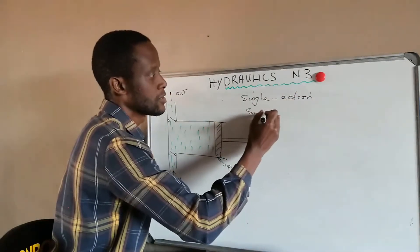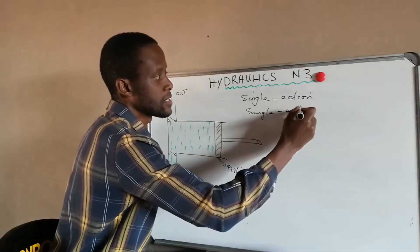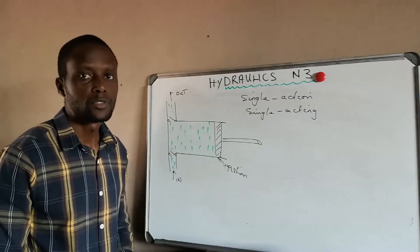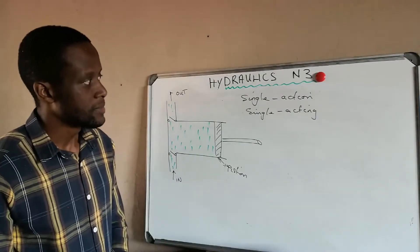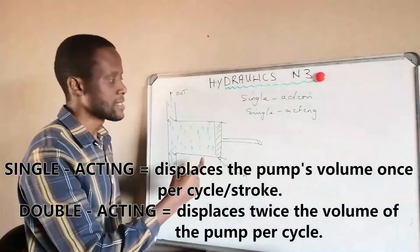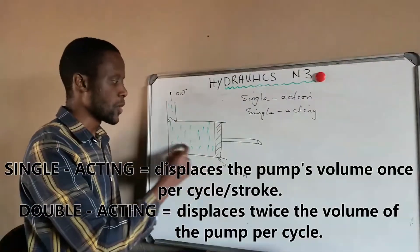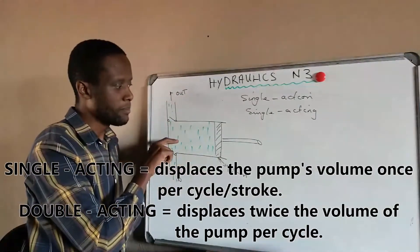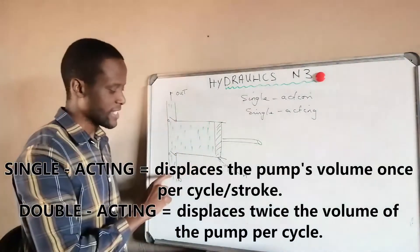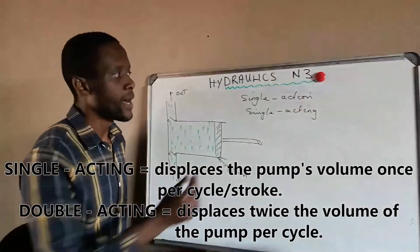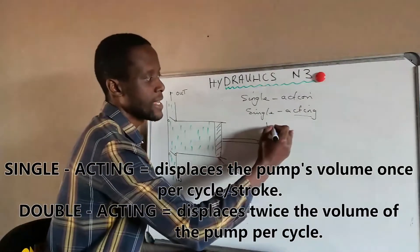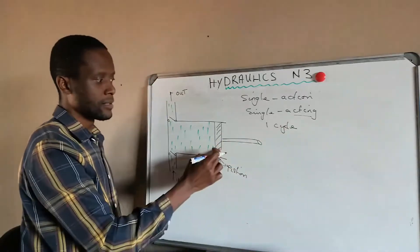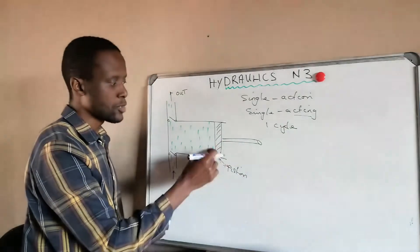Single acting or single action — they mean the same thing, so when reading a question be careful to note the terms used. This pump only displaces liquid in one action: when the piston moves in, that is when it pumps out water. As it moves back out it does not displace any water — it is only sucking in. So it only performs one action per cycle.